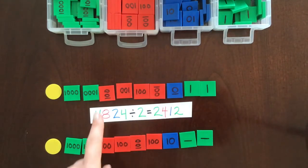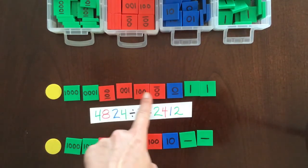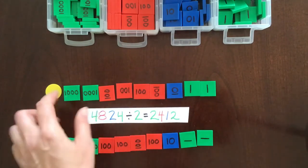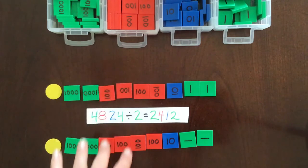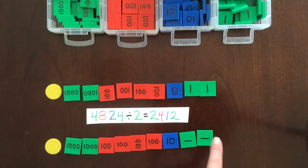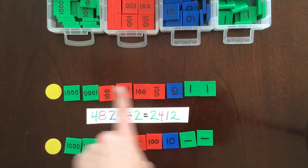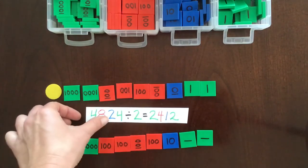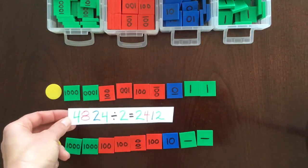So our answer is 2,412. Okay? All right, and again, you typically would do this vertically, but to fit in the frame, I'm doing it horizontally, but either way. All right, that is how to do static division using the Montessori stamp game.